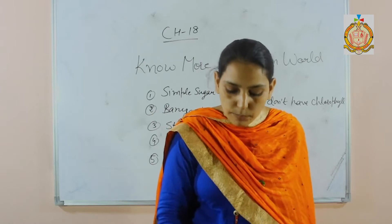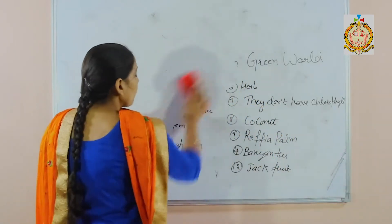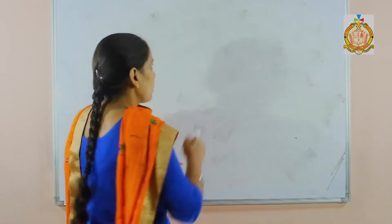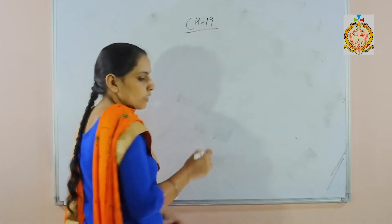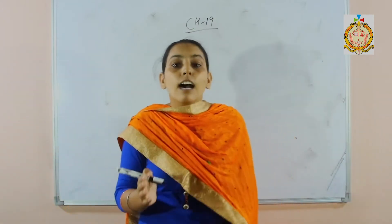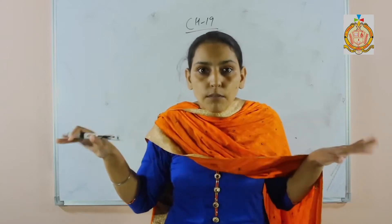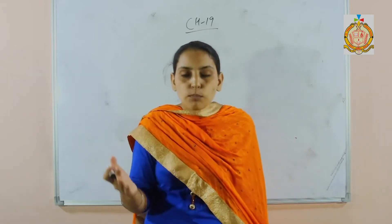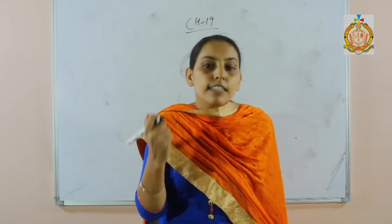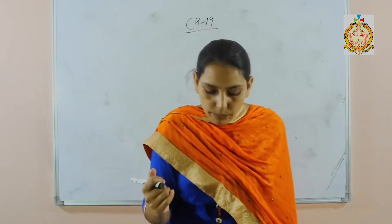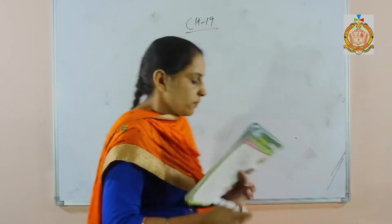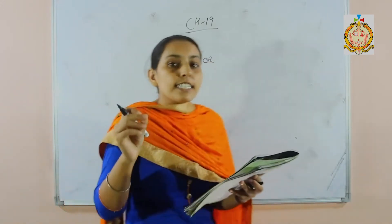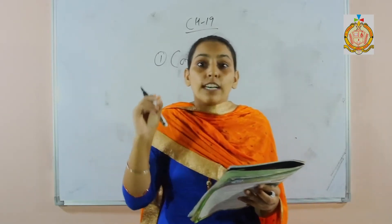Now students, let's do chapter 19: Amazing Birds. Birds are animals that have wings to fly. Different kinds of beautiful birds are found on the earth. Let's discuss some of them. First one is the condor. It is the largest flying land bird in the western hemisphere.